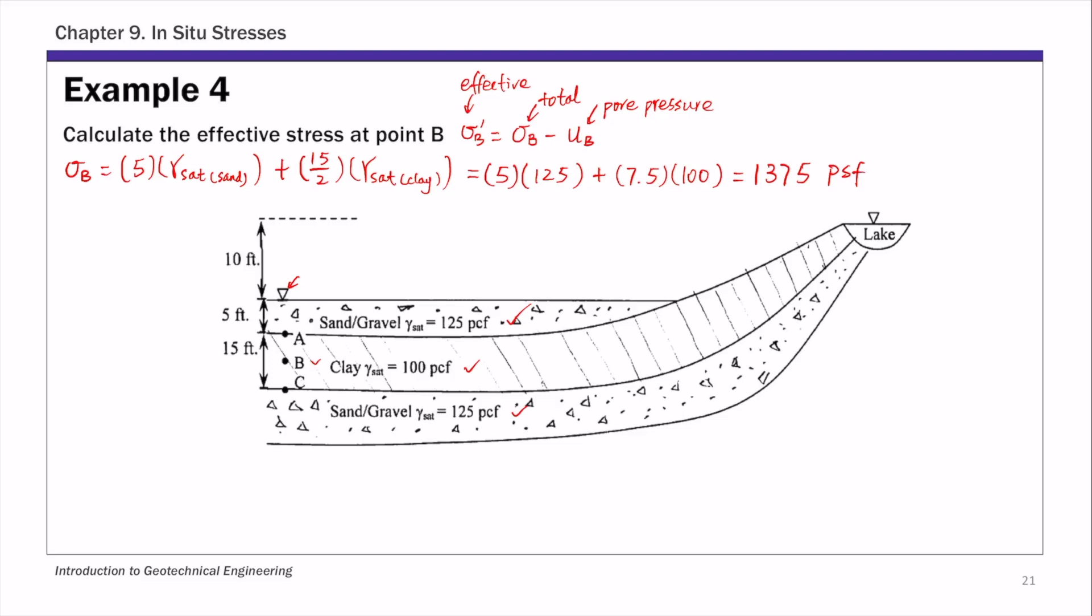The tricky part as I mentioned is the pore pressure. Since point B is at the middle of this impermeable clay layer, we don't actually know the pore pressure. The way we are going to find the pore pressure at point B is to use interpolation. We're going to look at the pore pressure at point A and then the pore pressure at point C. We calculate these two values and then interpolate to get the pore pressure at B.